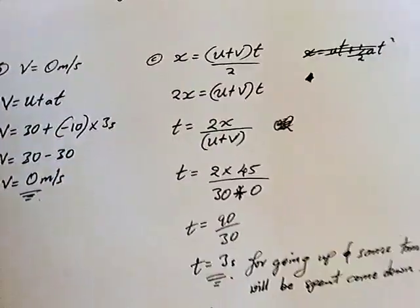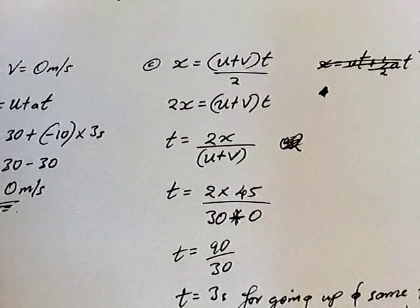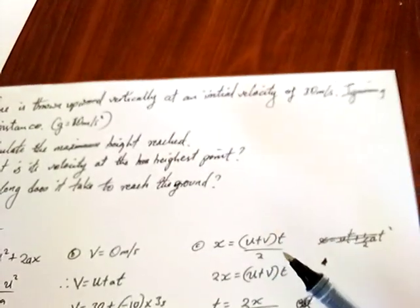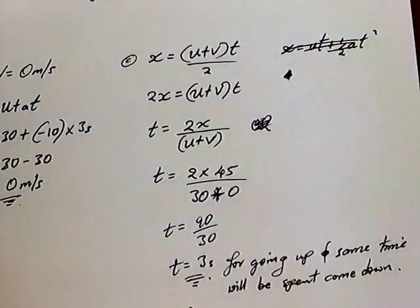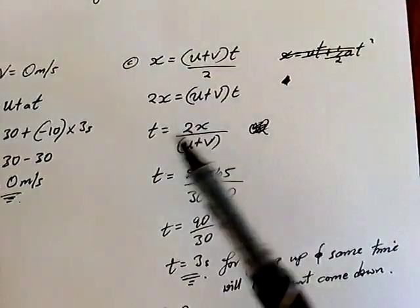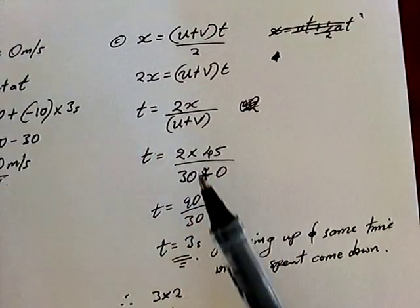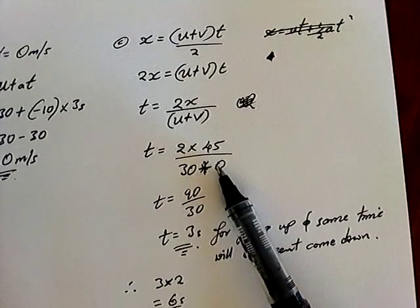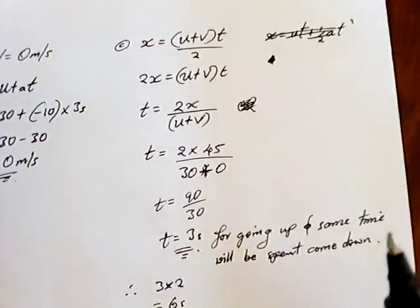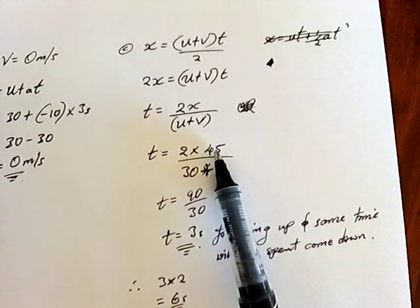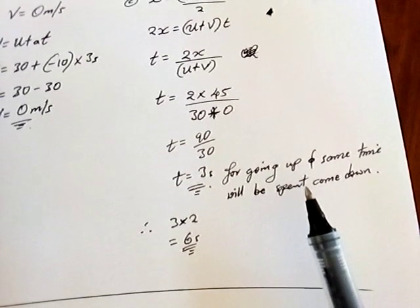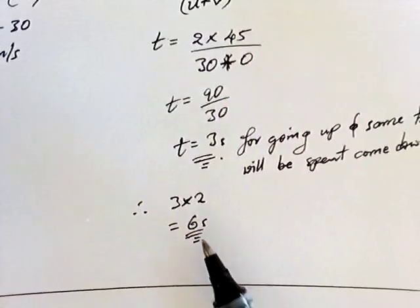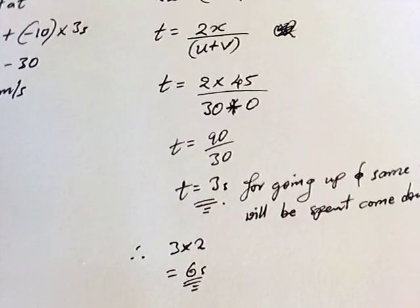Sub-question C: how long does it take to reach the ground? The stone goes up and comes back down. Using equation number 4, I make T the subject. Substituting: 2 times 45 (the height) divided by the sum of initial and final velocities (30 + 0) gives 3 seconds for going up, and the same time coming down — so total time is 6 seconds. Hopefully this was helpful. Remember to subscribe and leave your comments. Thank you.